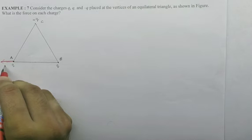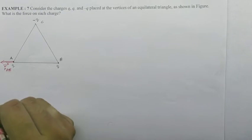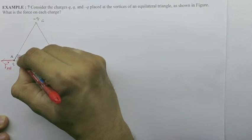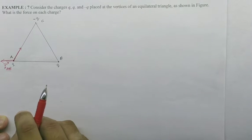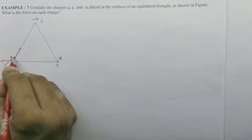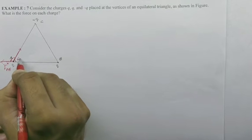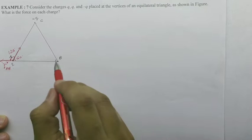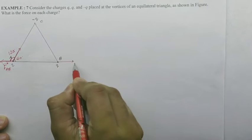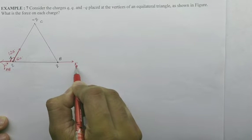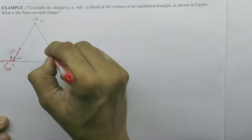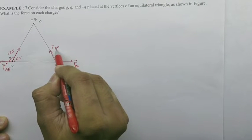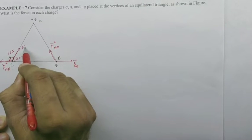It is FAB. Positive and negative attract, so they will be on the same line. This is the angle between these two. Similarly for B, there will be FBA and FBC. And FAC.